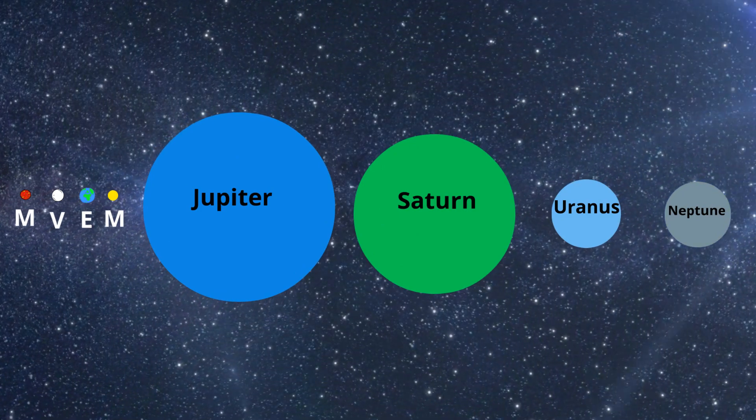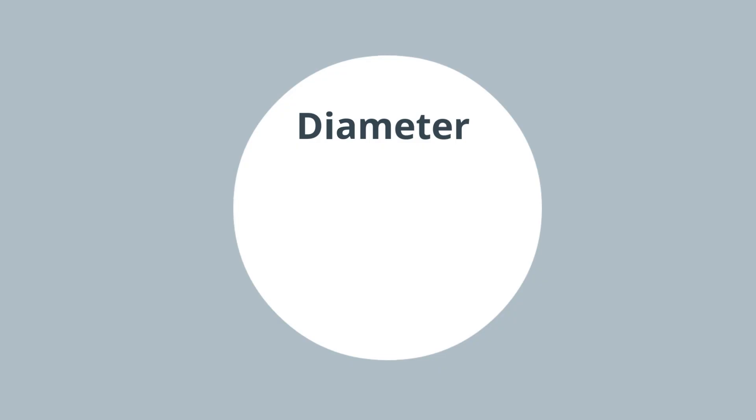And let's look at the diameter. And if you remember, diameter is a straight line passing from side to side through an object, and in this case it's a circle.